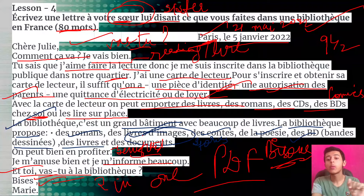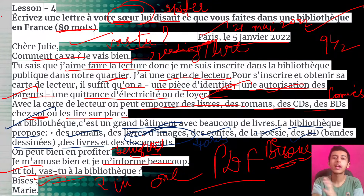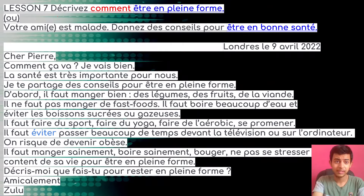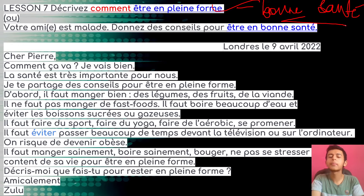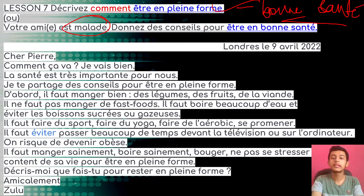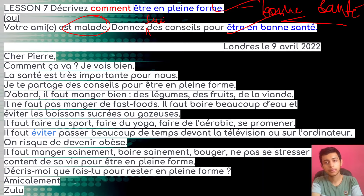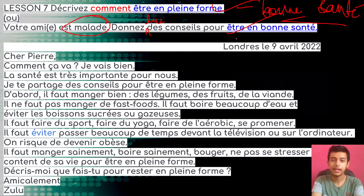Now the second letter — other possibilities from this chapter: they can ask you to describe the novel or book you read recently. From lesson seven, there are two probable questions. One is telling about how to stay in good health — 'en bonne santé' — in general. The second says your friend 'est malade' — is ill — so give him or her some advice for staying in good health. Any one of them will be asked but the content remains the same.